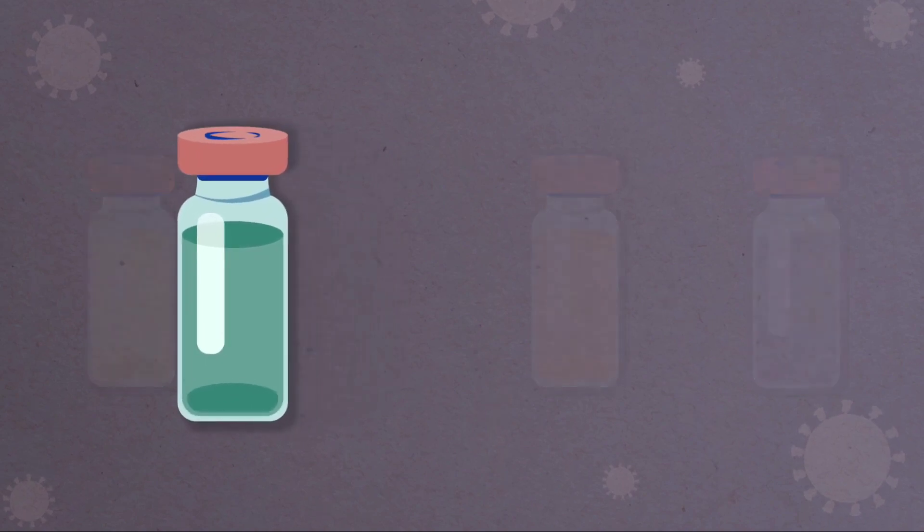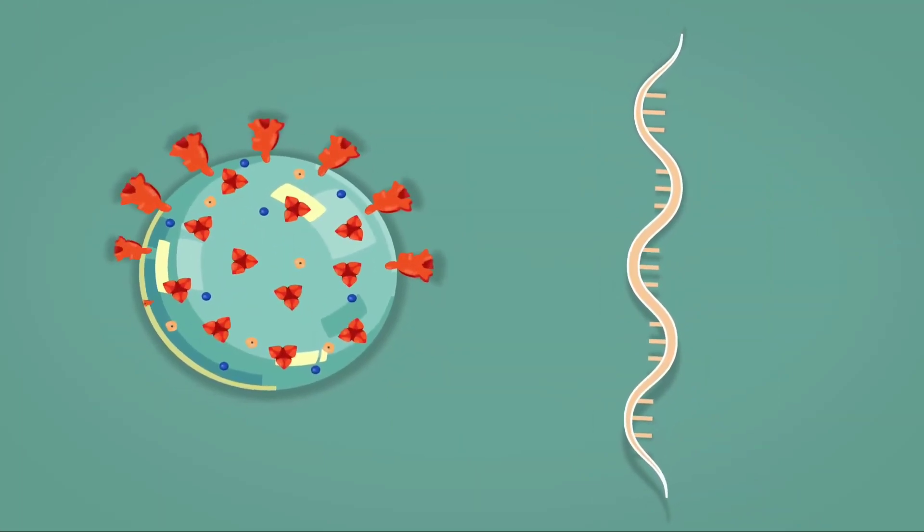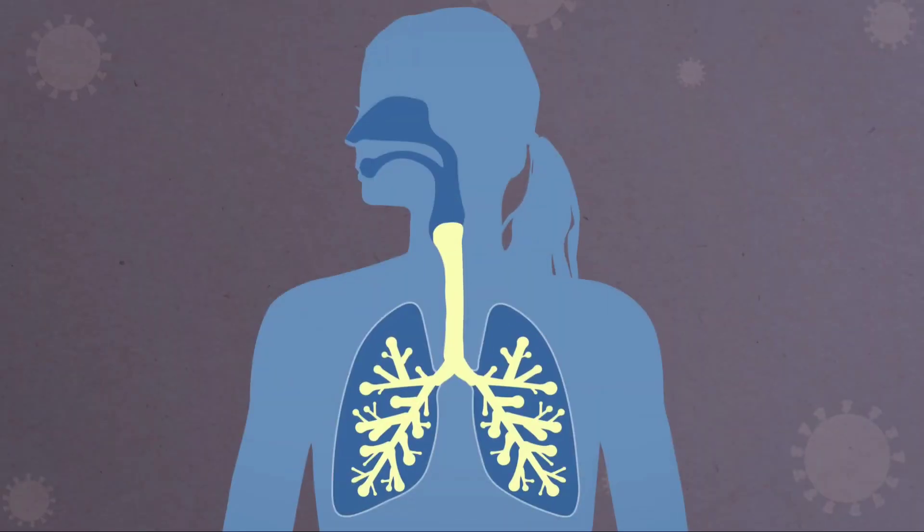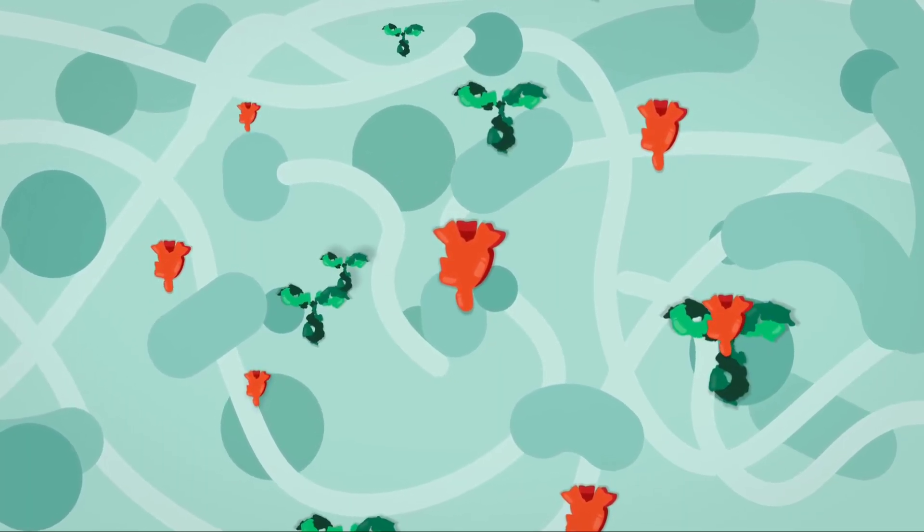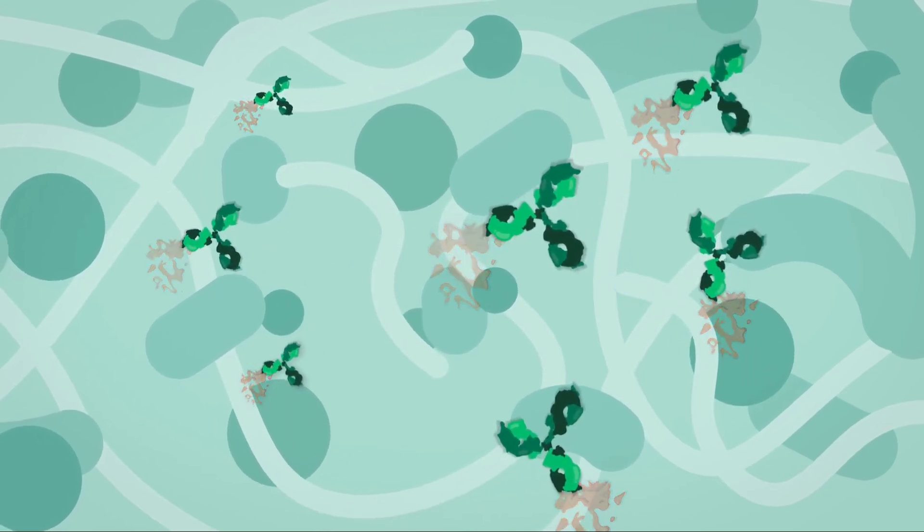The leading SARS-CoV-2 vaccines are mRNA vaccines, based on incorporating the genetic blueprint for the key spike proteins into a formula. When injected into humans, it instructs our own cells to make the spike protein. In turn, our body then makes antibodies against it and protects us from the virus.